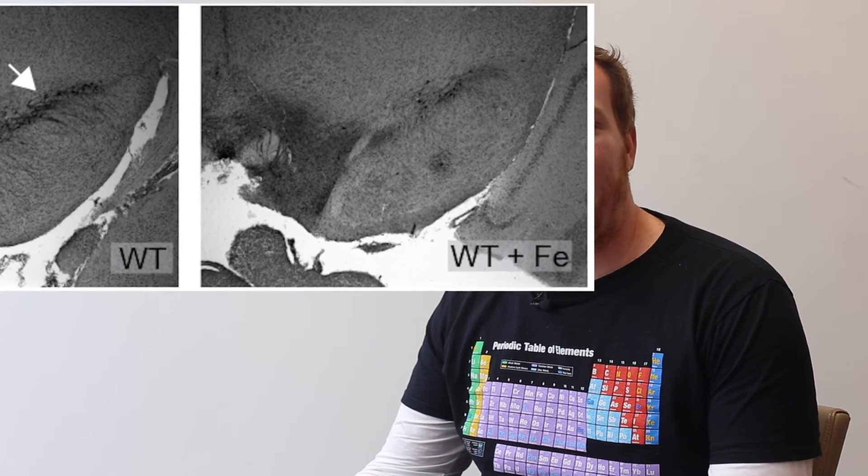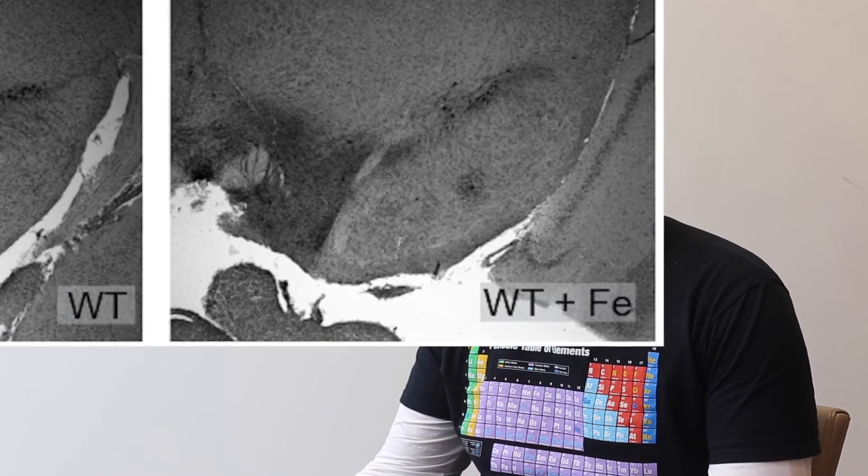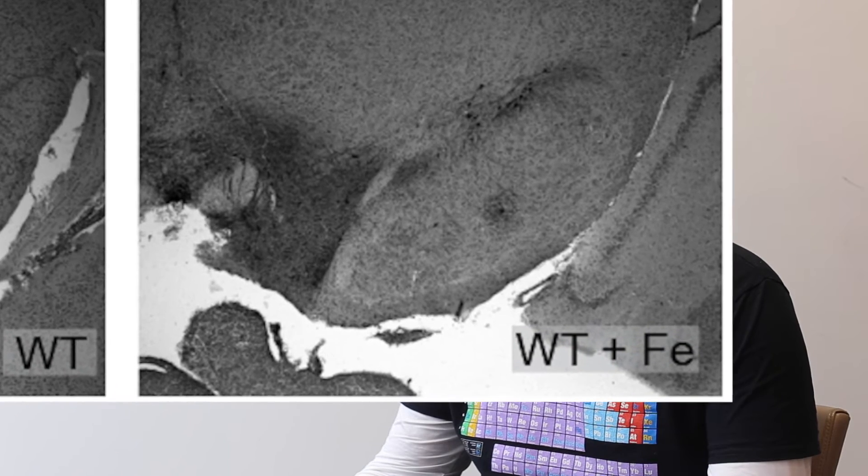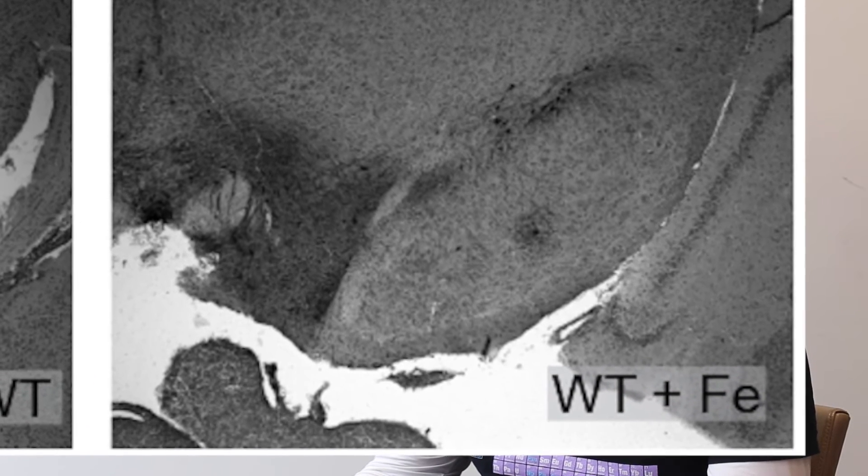In this area, called the substantia nigra pars compacta, cells that make the chemical dopamine slowly die and too much iron has been caught red-handed.